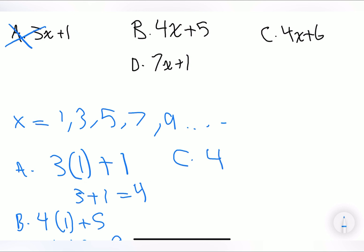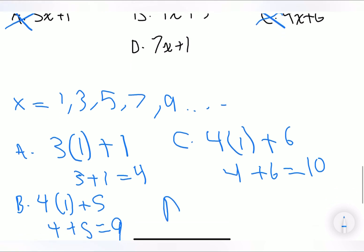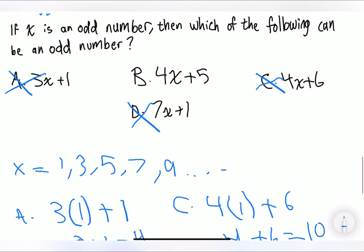So you can plug in 4(1) plus 6 is equal to 4 plus 6 is 10, and 10 is an even number. So we know that C cannot be the answer. Let's plug in our last one, D. So 7 times 1 is equivalent to 7. 7 plus 1 is 8, and 8 is an even number. So D cannot be the answer, and we can infer with the process of elimination, or if you just got there, B is the answer.